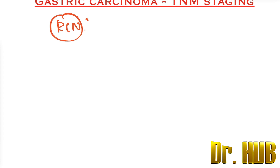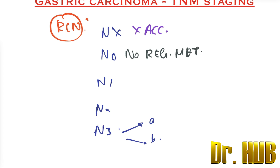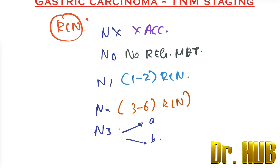Next, regional lymph nodes (RLN): NX means they are not assessed. N0 means no regional metastasis. N1 involves metastasis to one to two regional lymph nodes. N2 is when there are three to six regional lymph nodes involved.